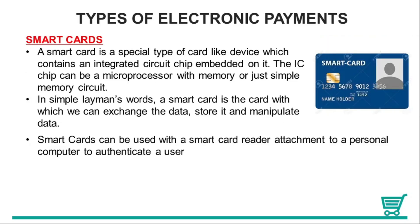The first type is a smart card. It is a special type of card-like device which contains an integrated circuit chip embedded on it. The IC chip can be a microprocessor with memory or just a simple memory circuit. A smart card is a plastic card with an integrated circuit chip attached to it.